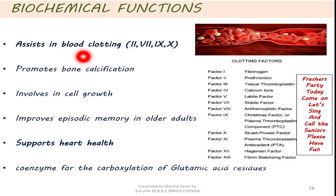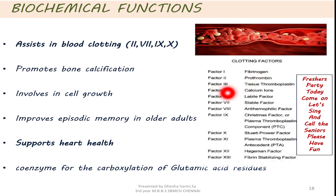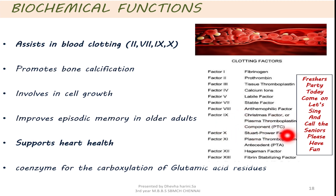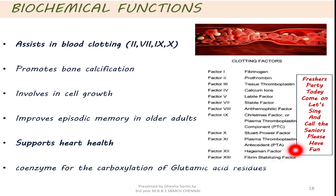Biochemical function: one of the most important functions is its involvement in blood clotting factors. The blood clotting factors are: factor 1 fibrinogen, factor 2 prothrombin, factor 3 tissue thromboplastin, factor 4 calcium ions, factor 5 labile factor, factor 6 is not present, factor 7 stable factor, factor 8 anti-haemophilic factor, factor 9 Christmas factor, factor 10 Stuart-Prower factor, factor 11 plasma thromboplastin antecedent, factor 12 Hageman factor, and factor 13 fibrin stabilizing factor. To remember these clotting factors, there is a mnemonic: 'Freshers party today, come on let's sing and call the seniors, please have fun.'